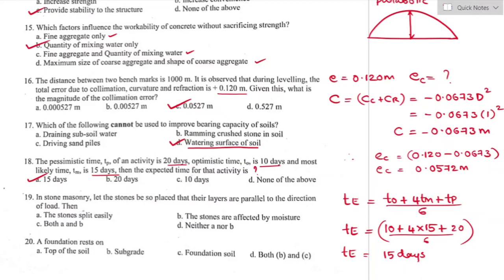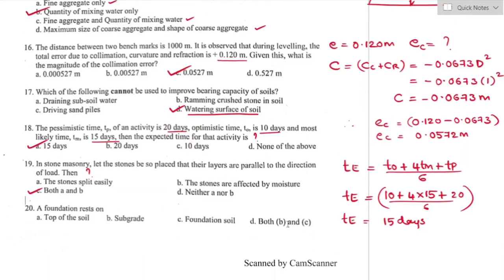Question number nineteen: in stone masonry, if stones are placed with their layers parallel to the direction of the load, the natural bedding plane is normal to the direction of pressure. They can easily split the stone, and they are affected by moisture. Both options A and B are correct — stones split easily and stones are affected by moisture.